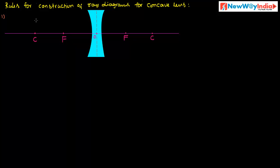Let us discuss the rules for construction of ray diagrams for concave lenses. Consider this is a concave lens. This is the optical center, this is the principal focus, this is the center of curvature, and this is the principal axis.